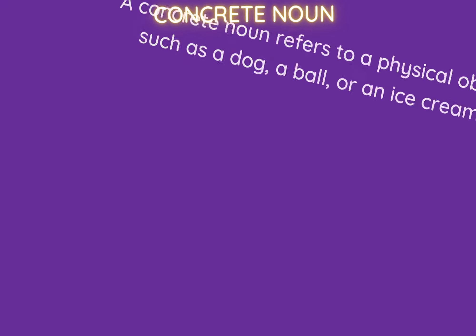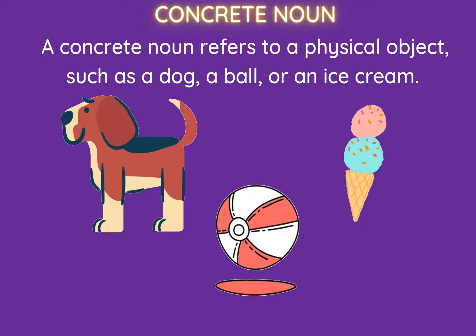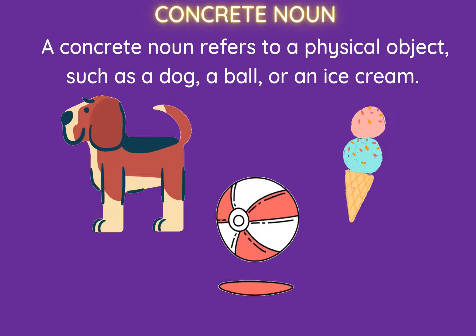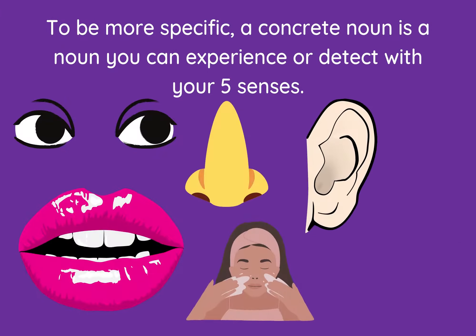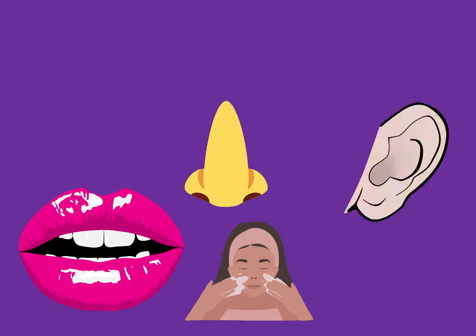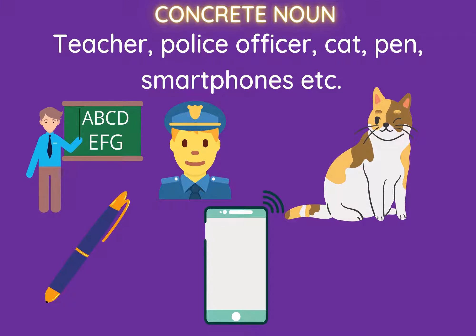Next, we are going to see what is a concrete and abstract noun. A concrete noun refers to a physical object such as a dog, a ball, or an ice cream. To be more specific, you can taste, see, hear, smell, and touch your nouns — or you can detect them with your five senses. Some examples for concrete nouns are teacher, police officer, cat, pen, smartphones, and wag. You can detect these nouns with your five senses.